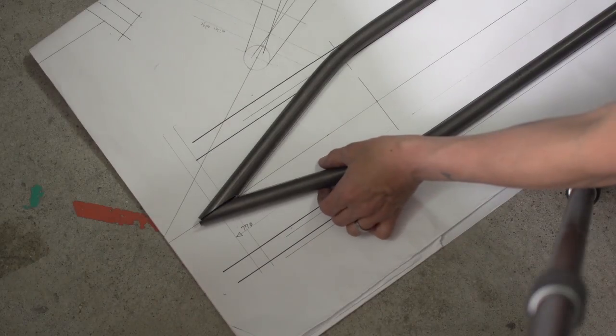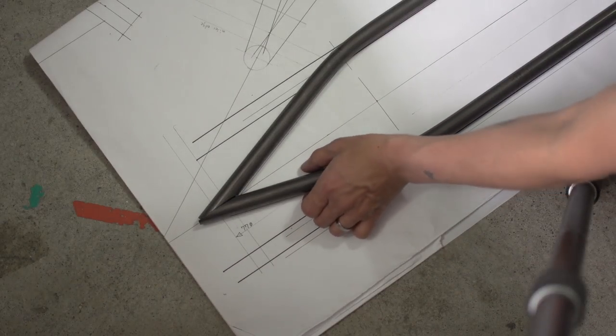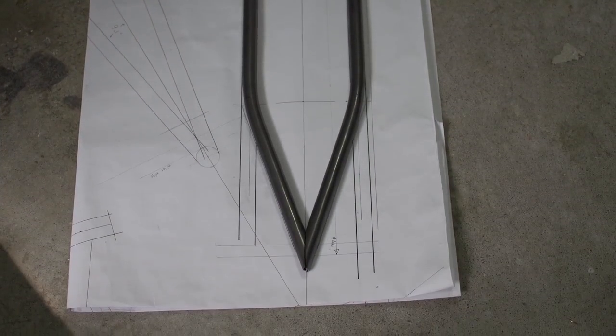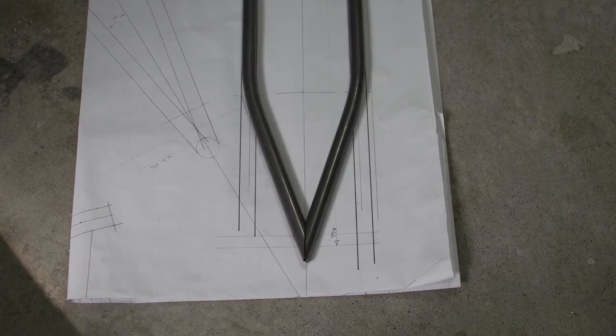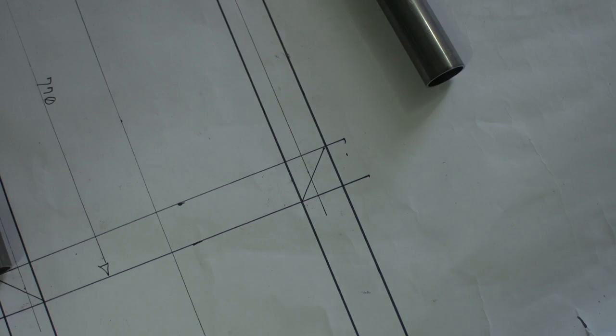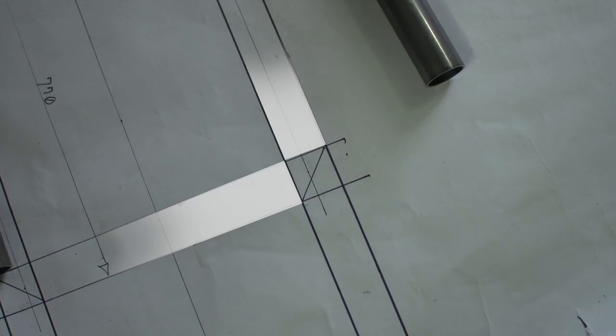Before we miter this, I want to first get the back end of the rack completely welded. My design on paper shows two cut tubes and then a wedge tube insert. I went with this design because I like the aesthetic of a sharp radius.